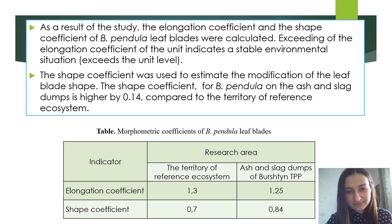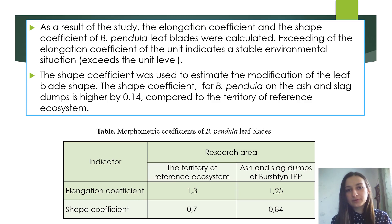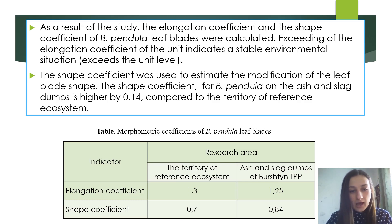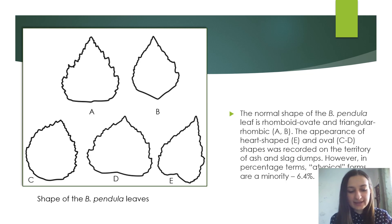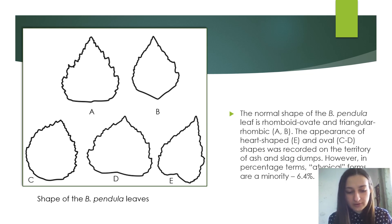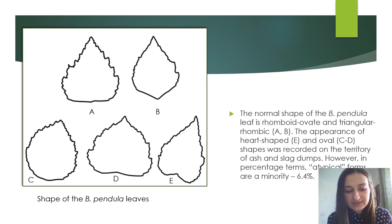The change in the shape of the leaf blade causes a higher ratio of the upper and lower parts of the leaf blades in the sample from ash and slack dumps in comparison with the territory of the reference ecosystem. We also studied the change in the shape of the leaf blades. The normal shape of Betula pendula leaves is rhomboid or wedge-shaped and triangular rhombic. The appearance of heart-shaped and oval shapes was recorded on the territory of ash and slack dumps. However, in percentage terms, atypical forms are a minority.